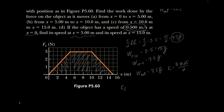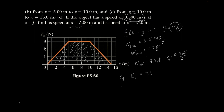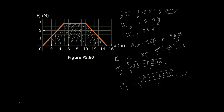So kinetic energy final minus kinetic energy initial equals 7 and a half. Then, solving for v final: take 7 and a half plus kinetic energy initial, double it, divide by mass, and take the square root. That comes from mv_final squared over 2 minus mv_initial squared over 2 equals 7 and a half. You can double everything, divide by mass, and root. Using a calculator: 2.29 meters per second. That is the answer to question 60.